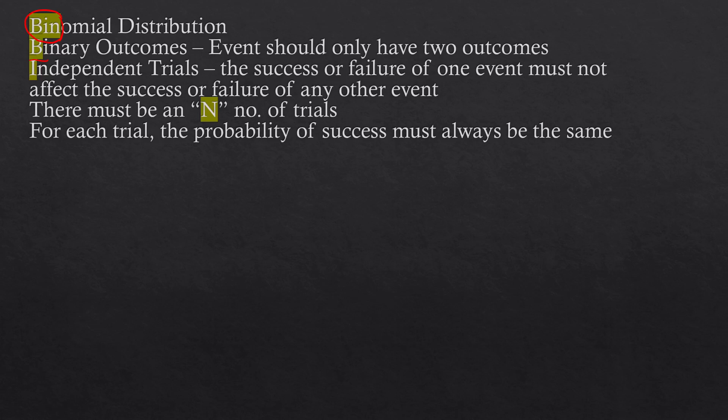Next, I stands for independent trials, meaning the success or failure of one event must not affect the success or failure of any other event. Finally, N means there must be a defined number of trials, and for each trial, the probability of success must always be the same.